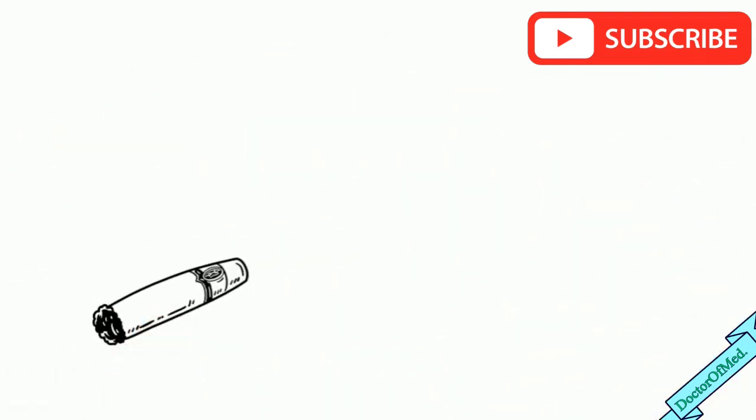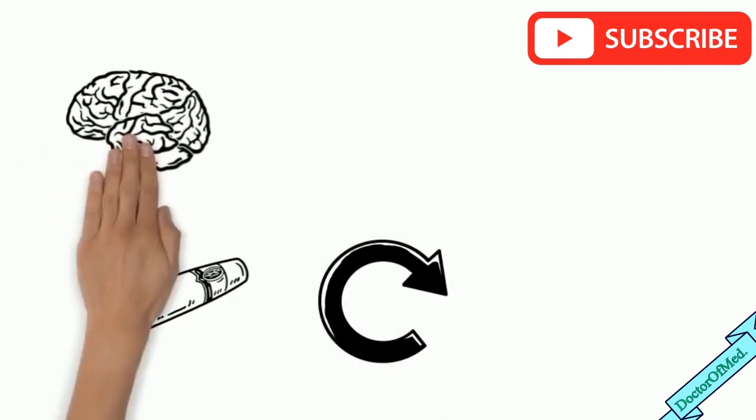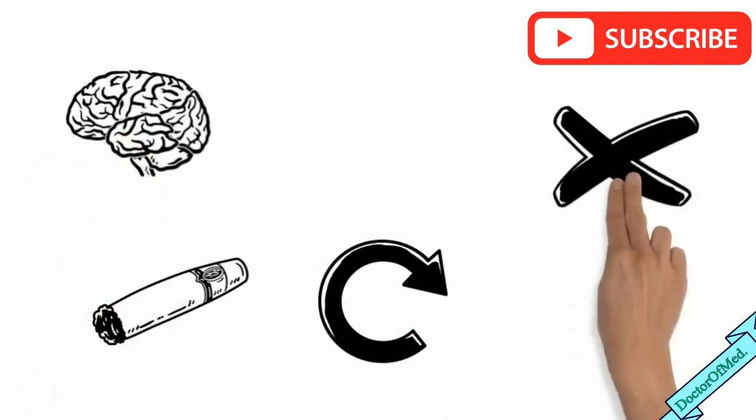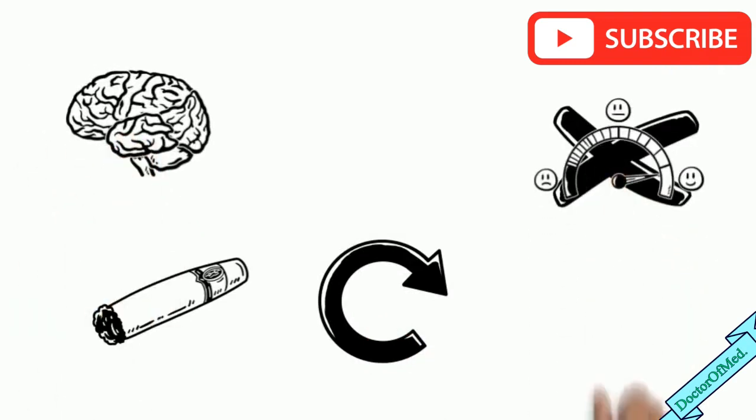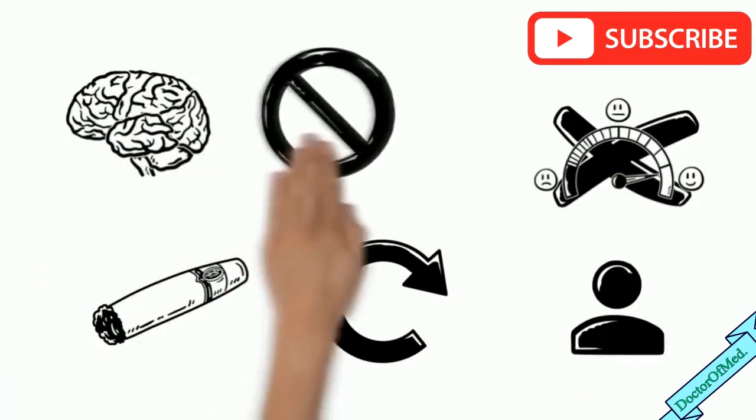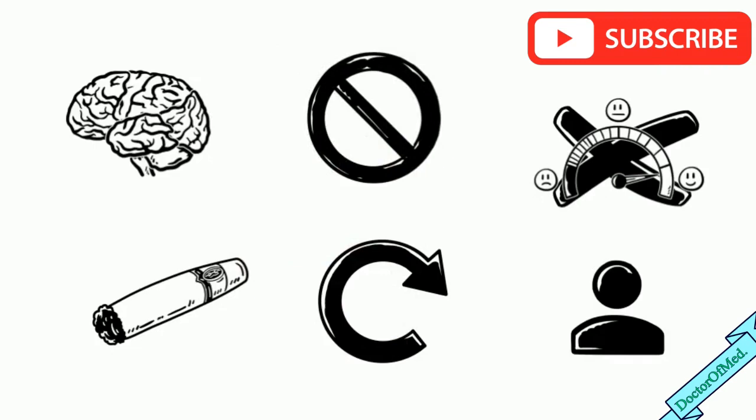Chronic tobacco use causes repeated dopamine rush in the brain which eventually desensitizes the mechanism of euphoria. As a result, a person increases the daily nicotine intake because the brain is no more responsive to the number of cigarettes he used to take previously.